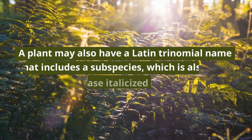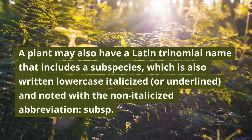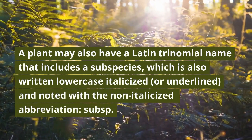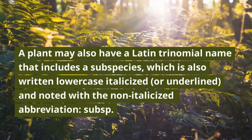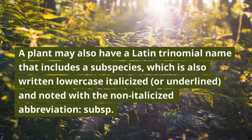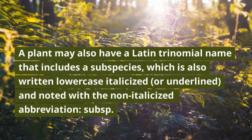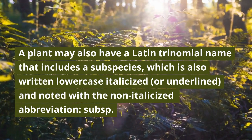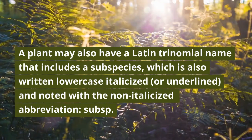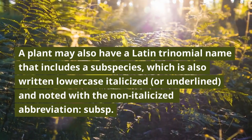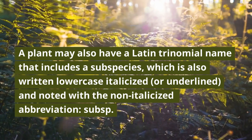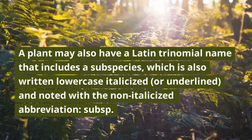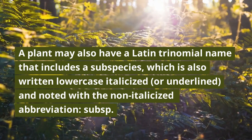A plant can also have a Latin trinomial name — three names — that includes a subspecies along with the genus and the specific epithet. The subspecies is also written in lowercase and italicized or underlined, and noted next to the species name with the non-italicized abbreviation 'subsp.' followed by a period.